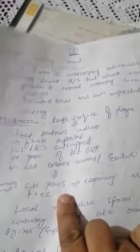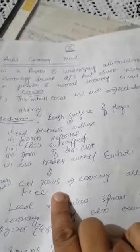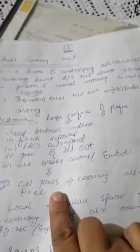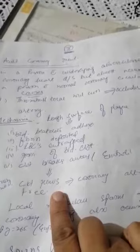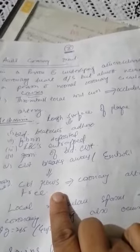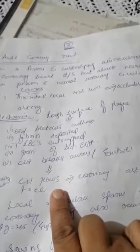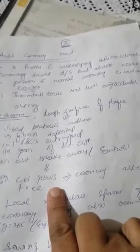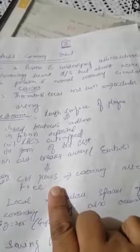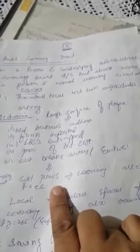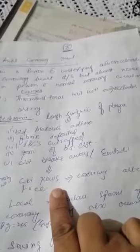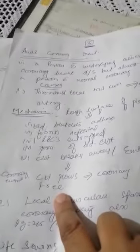The second reason for acute coronary artery occlusion is spasm of the coronary artery. Many clinicians believe that local muscular spasm of a coronary artery can also occur. The spasm can result from direct irritation of the smooth muscles of the arterial wall by the edges of an arteriosclerotic plaque, or from local nervous reflexes that cause excessive coronary vascular wall contraction.